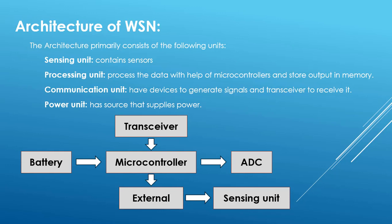A chart shows how the architecture of a wireless sensor network works. A source battery provides power; a transceiver receives signals and sends them to the microcontroller. The microcontroller processes the data and stores the result in an external memory device when it doesn't have enough internal memory. The microcontroller then sends data to the ADC for further processing.